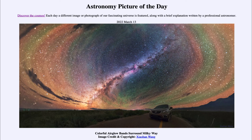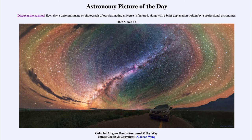They do glow, and we can see them here in the image, which has been processed to accentuate those colors and bring them out so we can really see the air glow much better. It is a processed image to show us the detail and the different patterns we see within the air glow — like ripples on a pond when you throw a rock into it, we can see similar patterns here within the air glow. That was our picture of the day for March 13th of 2022, titled 'Colorful Air Glow Bands Surround Milky Way.'